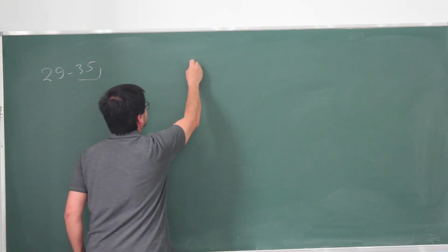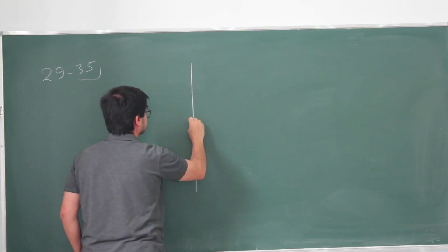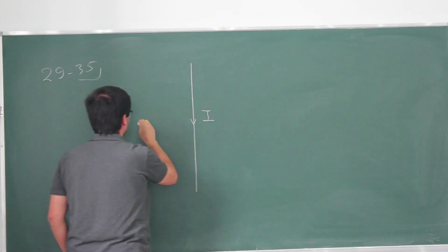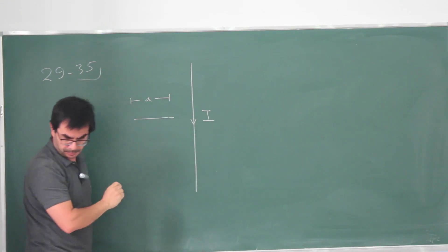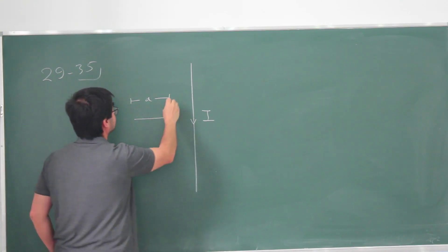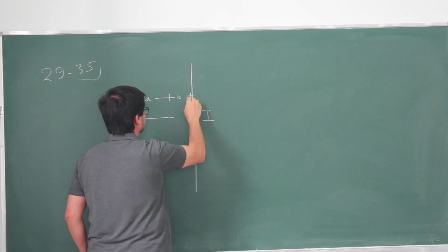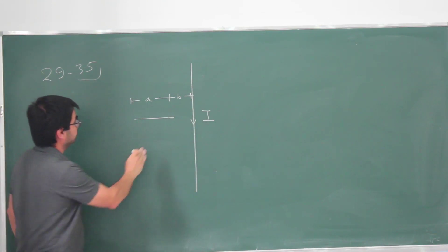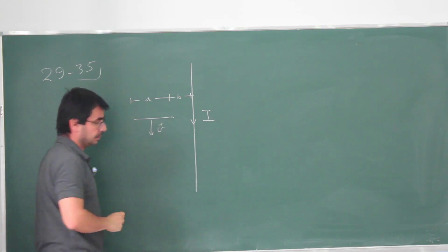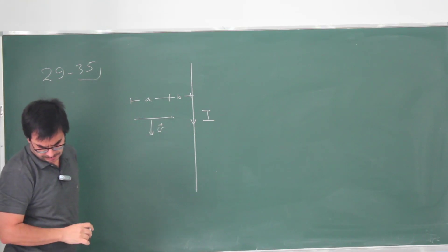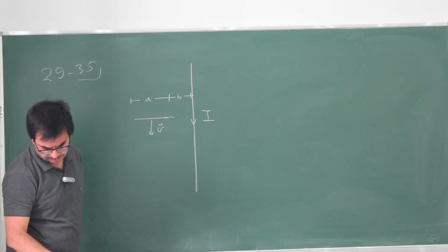Let me reproduce the figure here. We have a very long wire carrying some current I, and a short segment of wire of length A. At the near end of the wire, it's a distance B from the long wire.